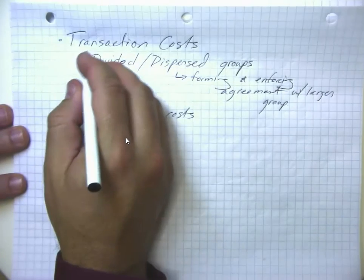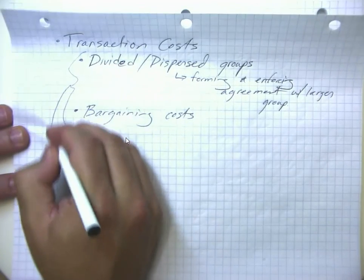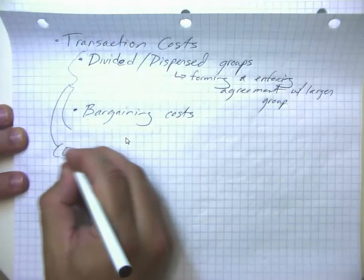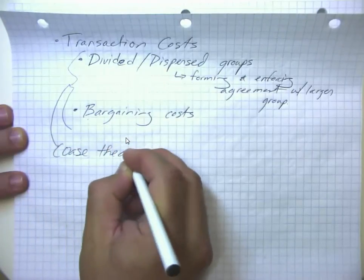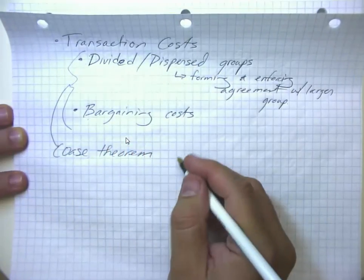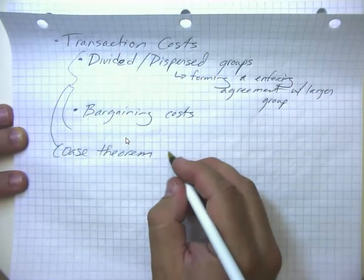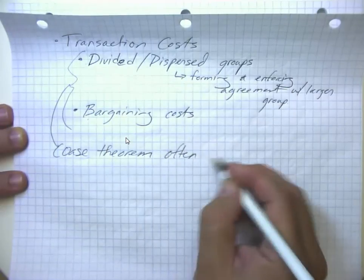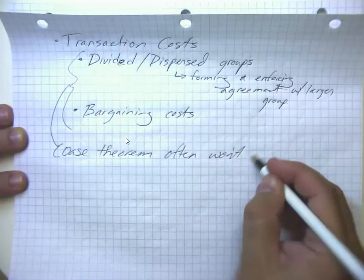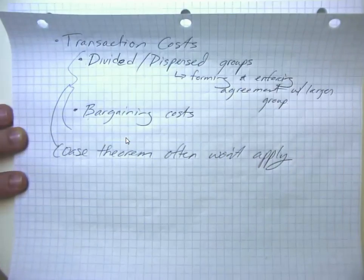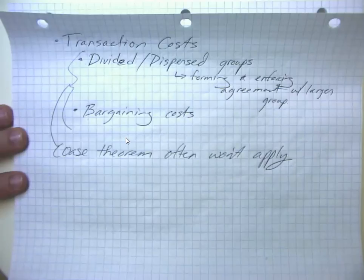So because of these two things, the Coase Theorem, it can apply in some situations, but often it won't apply because the costs of reaching a transaction are simply going to be too big.